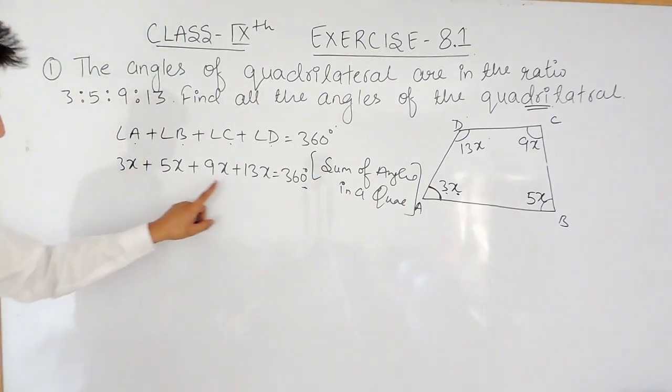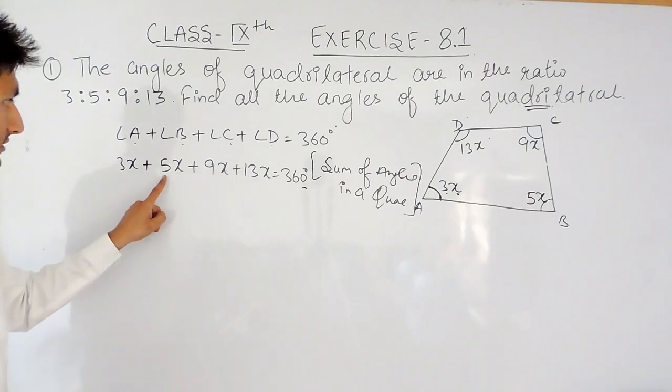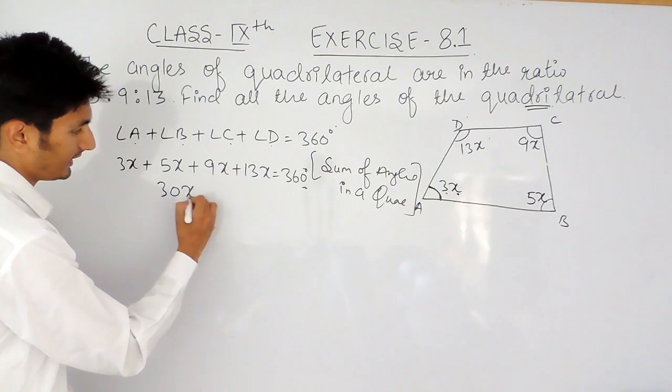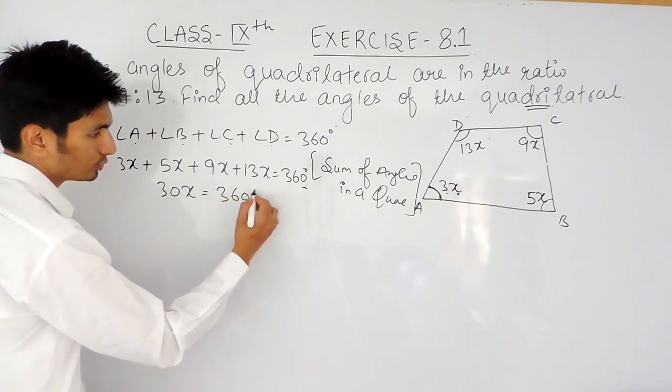Now, you have to add these, so, 13 plus 9 is 22 plus 5 is 27 plus 3 is 30. So, this is 30x, that will be equal to 360.